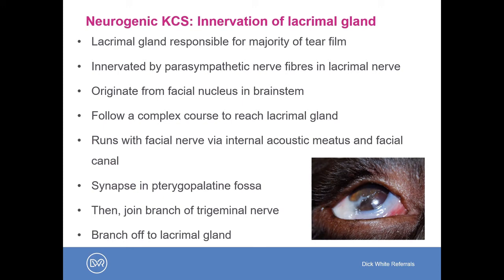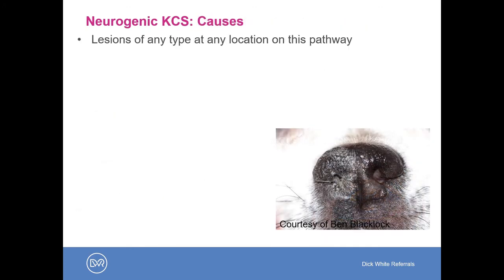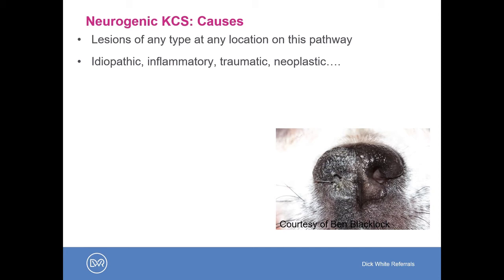This is a very complicated course, but the key point is that a lesion of any type at any location along this pathway can lead to neurogenic dry eye. The inciting cause could be idiopathic, inflammatory, traumatic, or even neoplastic — so there are several potential causes of neurogenic KCS.